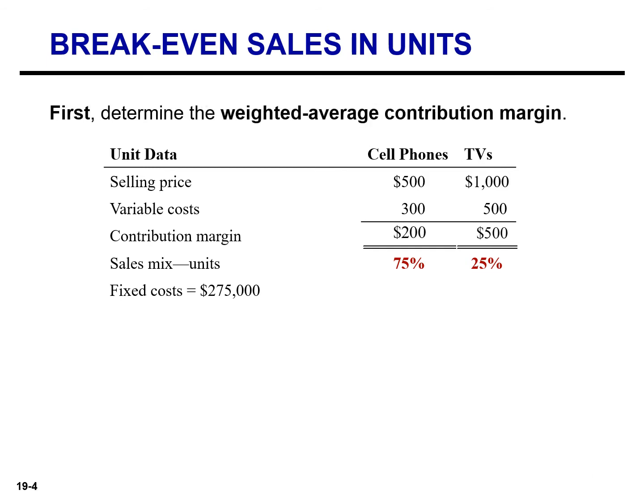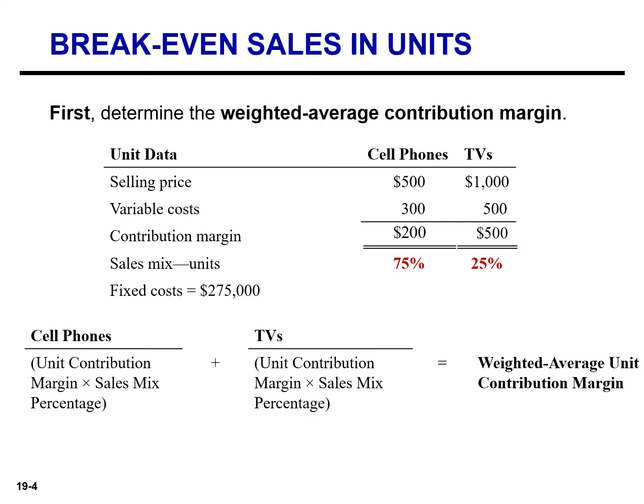We use the weighted average contribution margin because Vargo sells three times as many cell phones as TVs. As a result, three times as much weight should be placed on the contribution margin of cell phones than on the TVs. To calculate the weighted average unit contribution margin, we take the contribution margin for cell phones and multiply by the sales mix, then add the contribution margin of the TVs multiplied by their sales mix, arriving at $275.